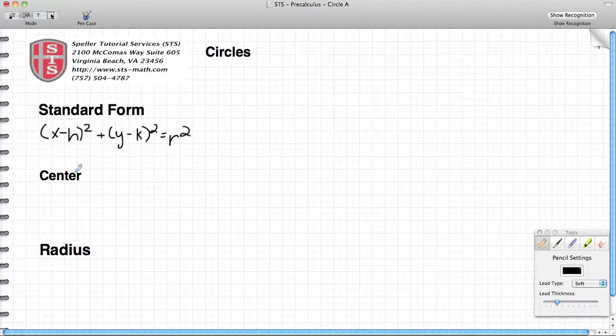The center of the circle is defined as h, k. Notice how h is near the x variable and k is by the y variable. And the radius is going to be when we take the square root of this value here, r squared, which will give us the radius.